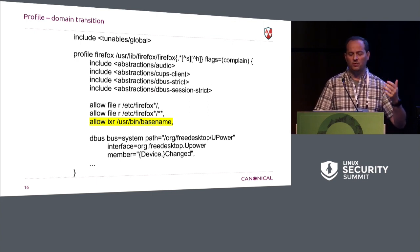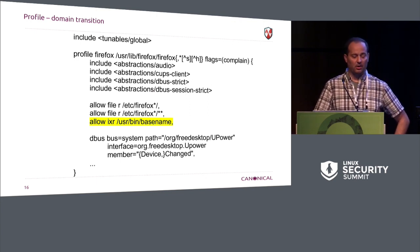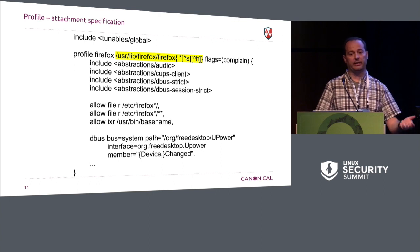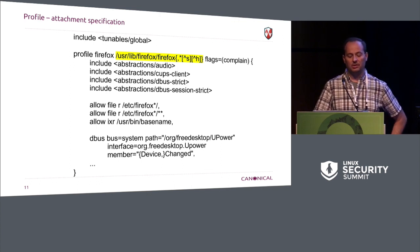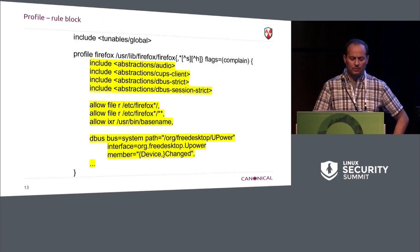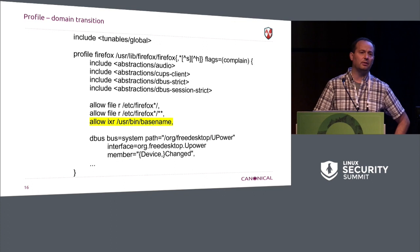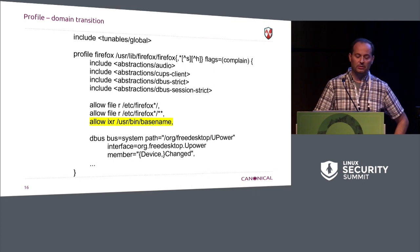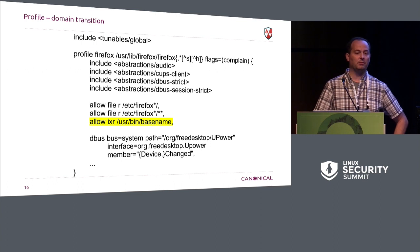There are some rules that each profile gets to control domain transitions. The attachment is used by unconfined — we get out of the way as much as we can. Unconfined needs some way to know whether it's going to attach to applications that it runs and put them into a confined context. The profile can choose to use the attachment, but it can choose to do something else. This one's saying: allow running Firefox with the base name, but it's going to inherit my confinement — we're not transitioning.